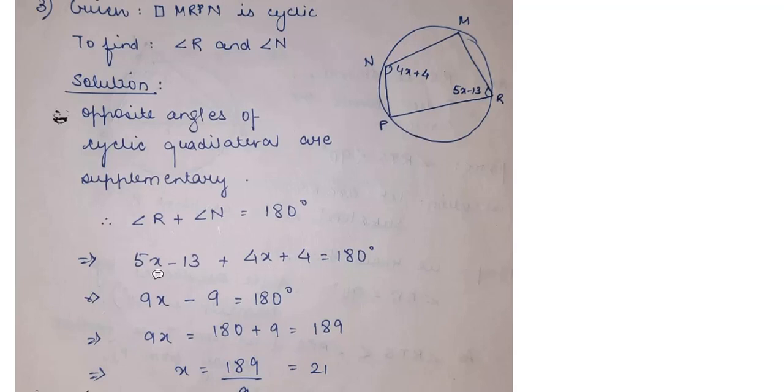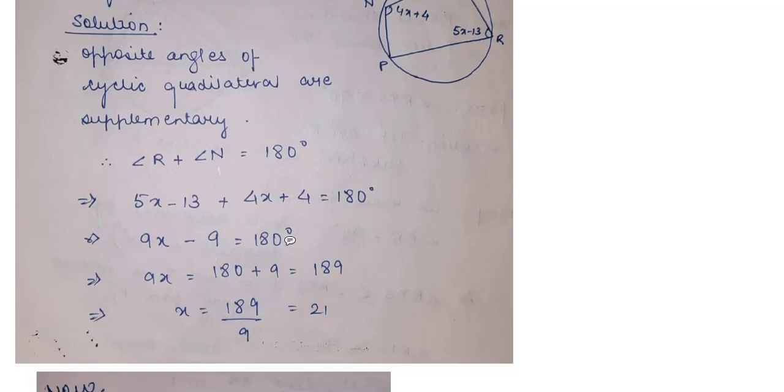You know that sum of the opposite angles of cyclic quadrilateral is 180 degrees. So add angle R and angle N, it should be 180. R's value is 5X minus 13. N's value is 4X plus 4. Now, bring X together, numbers together. 5X plus 4X is 9X. Minus 13 plus 4, when you add 4 to minus 13, you'll reach minus 9. Now, this minus 9 goes to the other side, it becomes 180 plus 9. Then divide by 9. So 189 by 9 is going to give you 21. X's value is 21.